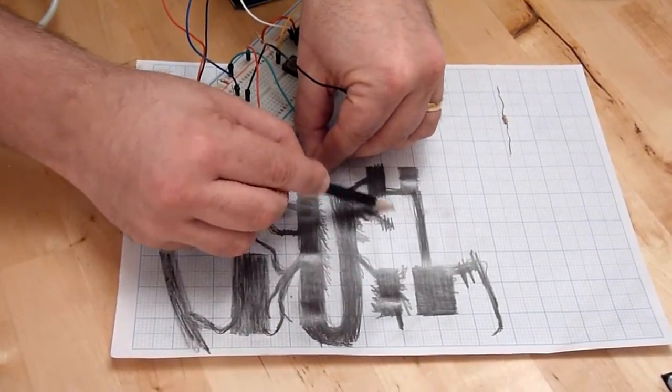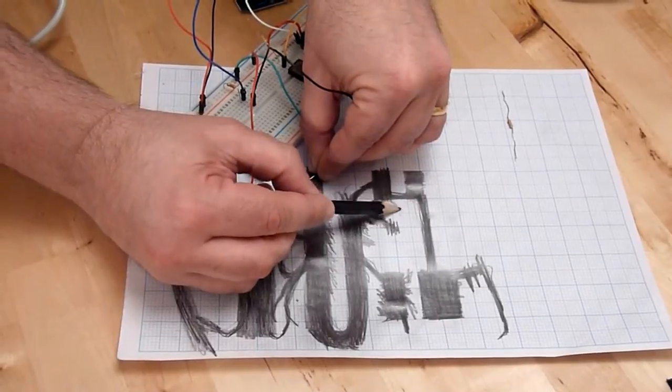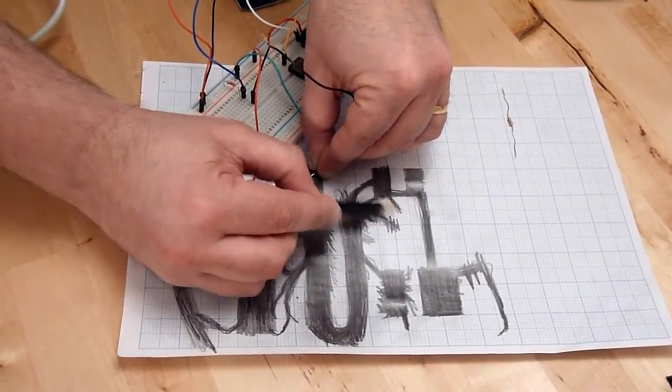If the pencil goes up altogether then we lose contact. But you can colour in a bit if you want to.